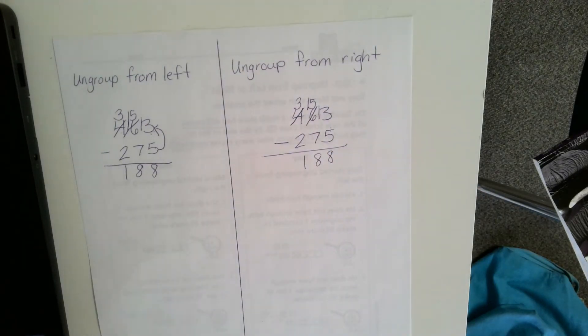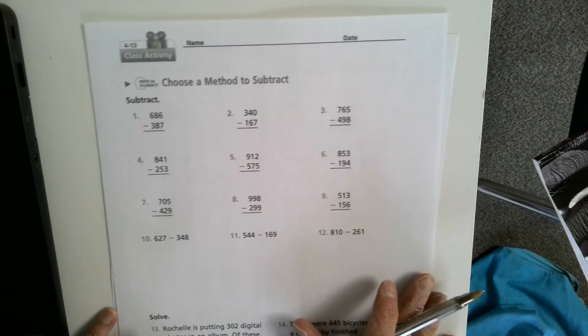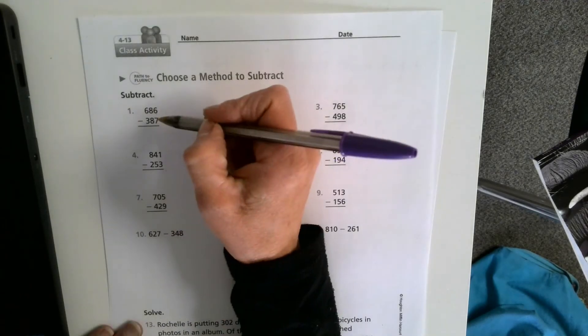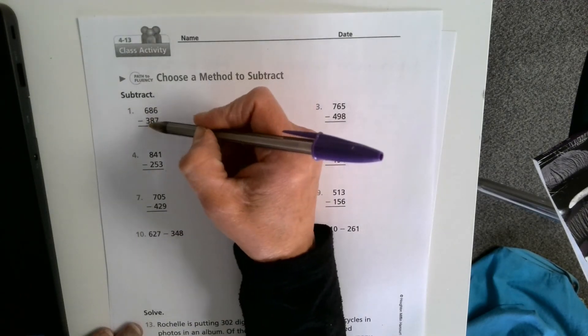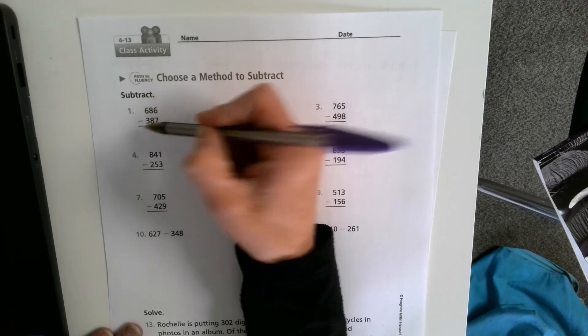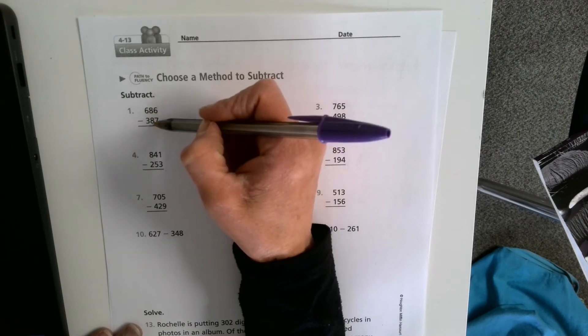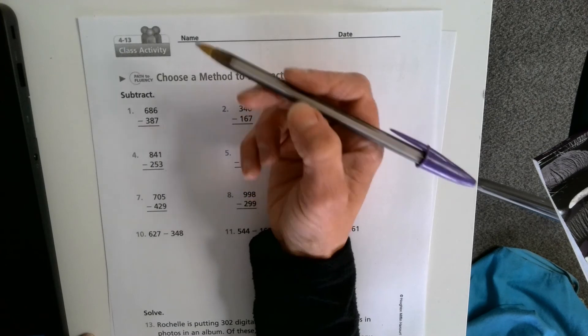Let's try this method with a few subtraction problems. Turn to page 244. We're going to look at number 1, 686 minus 387. I'm going to start on the left. 6 minus 3. Can I do that? Yes, 6 is greater than 3. 8 minus 8. Can I do that? Yes, because 8 take away 8 is just zero.